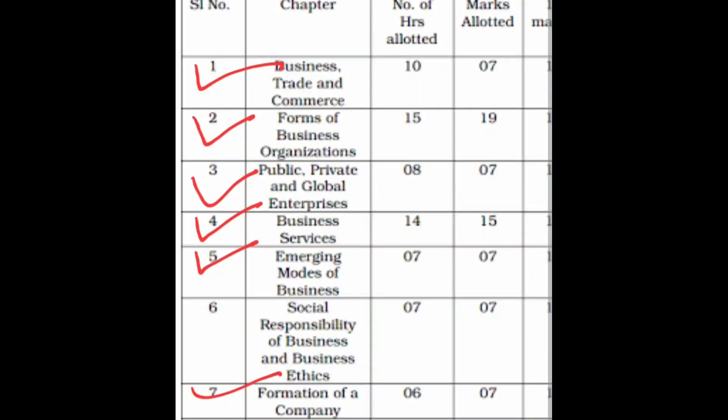This is a chart of midterm syllabus. Chapter number one: business trade and commerce. Chapter number two: forms of business organization. Chapter number three: public, private and global enterprises. Chapter number four: business services. Chapter number five: emerging modes of business. Chapter number seven: formation of company. This is our syllabus for midterm.